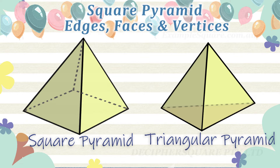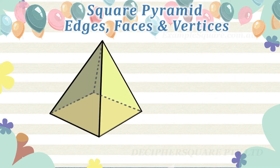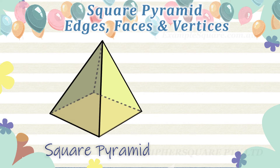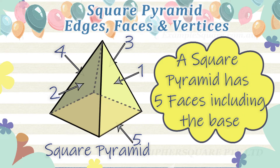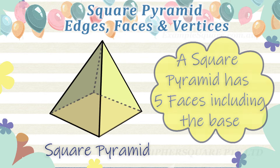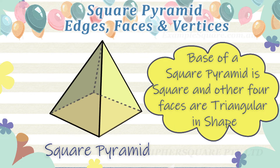Different types of pyramids may have different numbers of faces, edges, and vertices. A square pyramid has five faces. The square pyramid has a square shaped base and the other four side faces are triangular shaped.